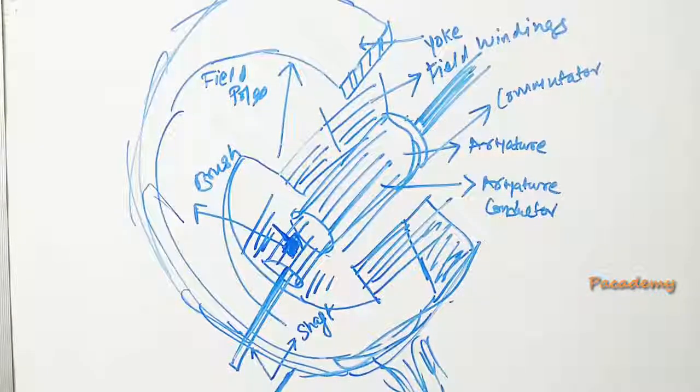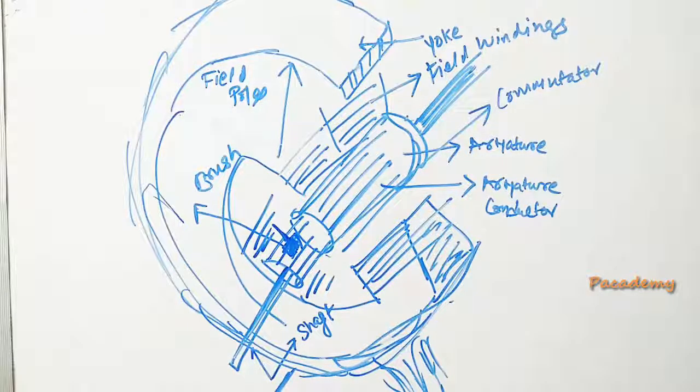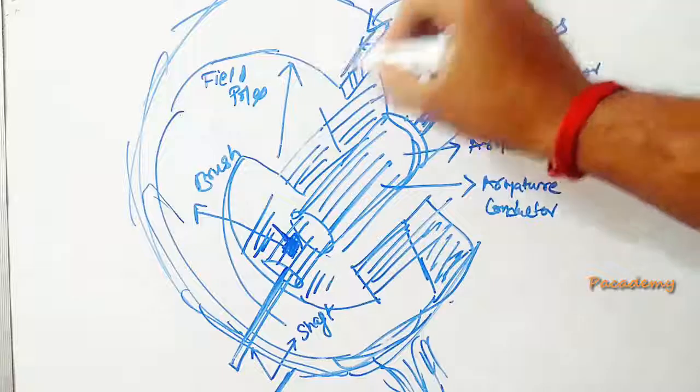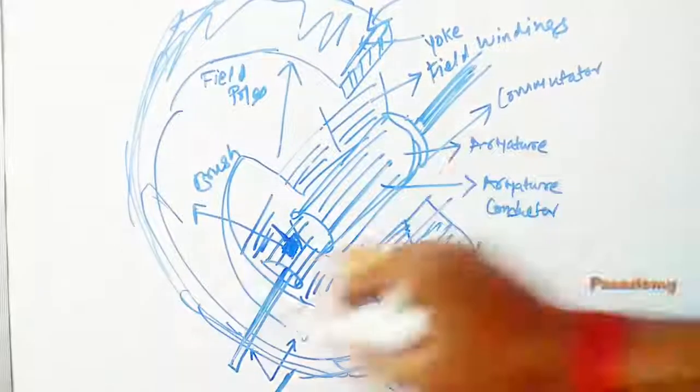This is a simple diagram depicting the different parts of a practical generator. The frame or the yoke is depicted here. This is the enclosure of the full generator.